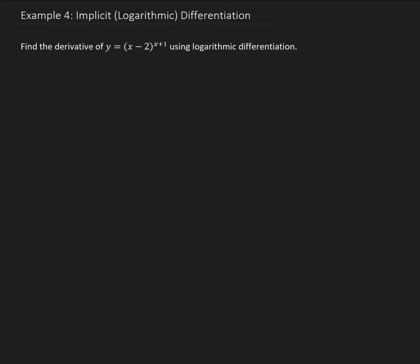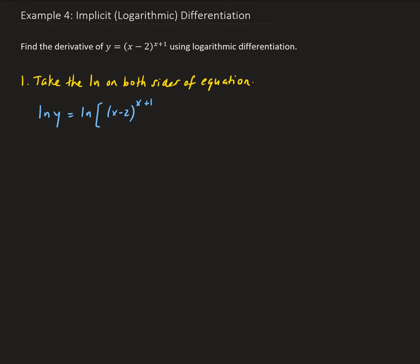The first step is to apply the natural log function on both sides of the equation. So we have natural log of y equals natural log of x minus 2 all raised to the power x plus 1. This allows us to bring the x plus 1 in front of the natural log, giving us: natural log y equals x plus 1 times natural log of x minus 2.